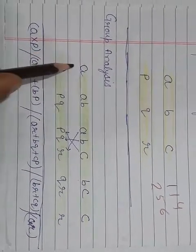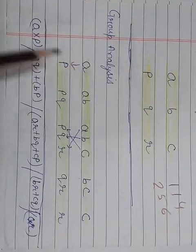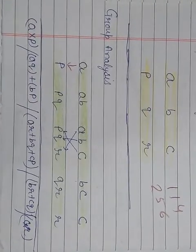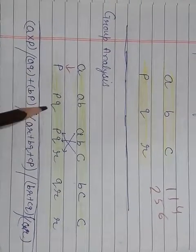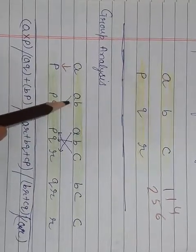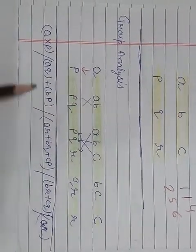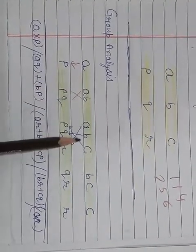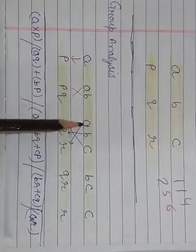First of all what to do, I have to multiply AP, A into P, then cross multiply of AQ and BP. After that you have to add, then cross multiply of these 3 digits.